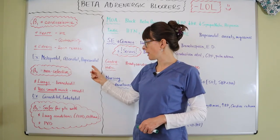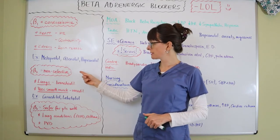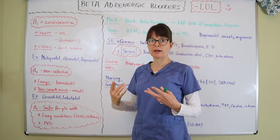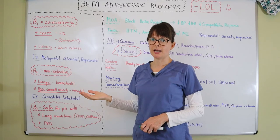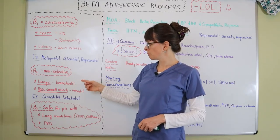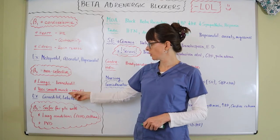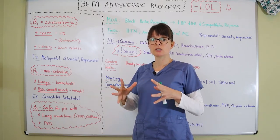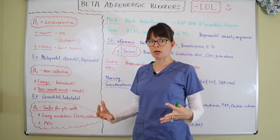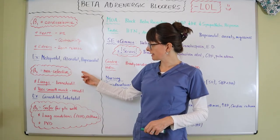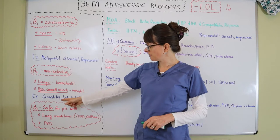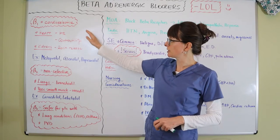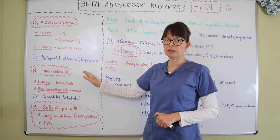Beta 2 receptors are non-selective and mostly located in the lungs — 'two lungs, beta 2' is another helpful mnemonic. They produce bronchodilation and are also located in vascular smooth muscle, helping dilate arteries and naturally lowering blood pressure. Examples of non-selective beta 2 blockers are carvedilol and labetalol.